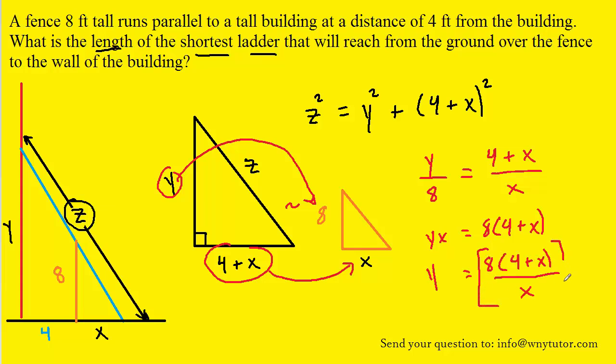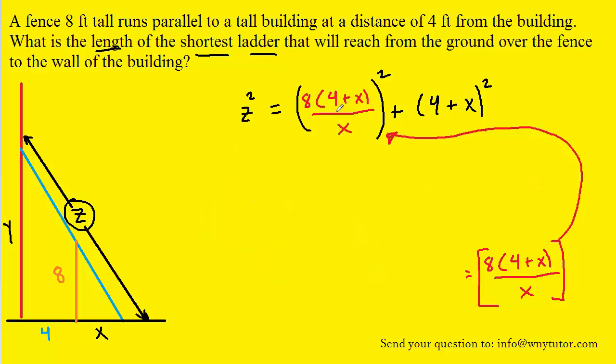Notice we have an expression for Y right here that can be plugged into our original equation from earlier and what that will do is give us an equation in terms of just one variable. So let's go ahead and do that and see what it looks like. So we've replaced Y with this expression in terms of X. Notice that it is still squared.